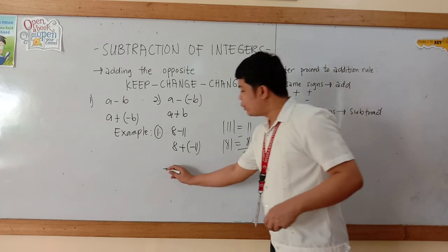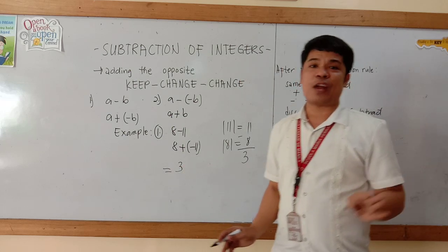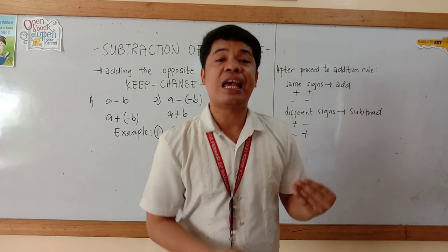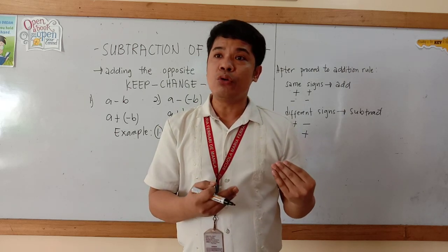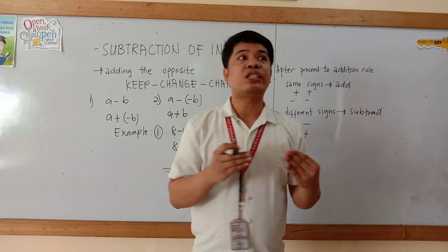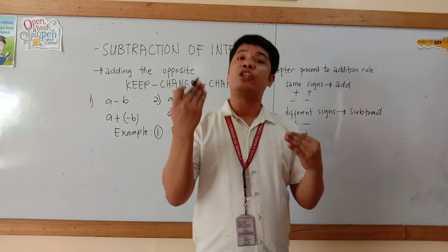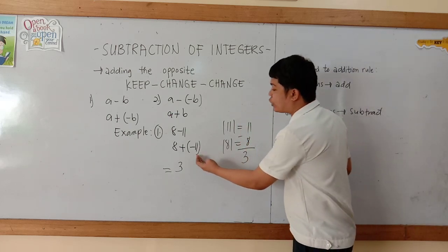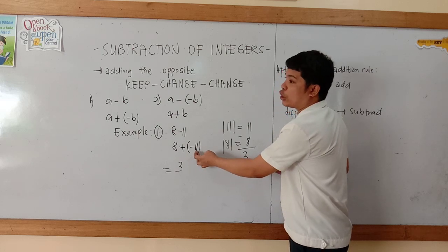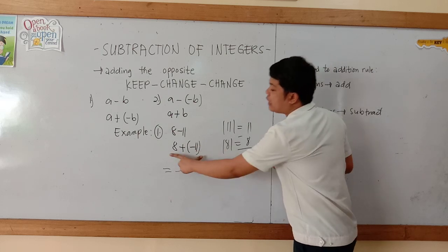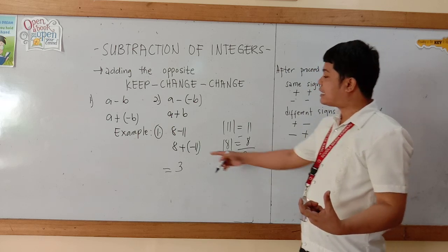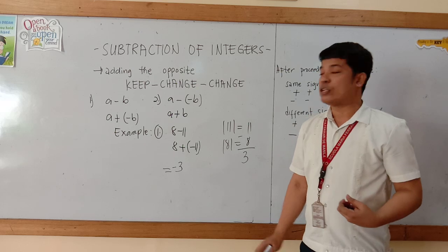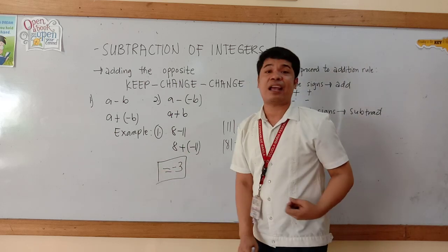So we put here our 3. After that, Maka Friendships, we need to see the sign of the integer with the greater absolute value — whatever the sign of the greater absolute value, we need to copy. Since 11 is the greater absolute value, its sign is negative. Therefore, the sign of our 3 is negative. So the final answer here, Maka Friendships, is negative 3.